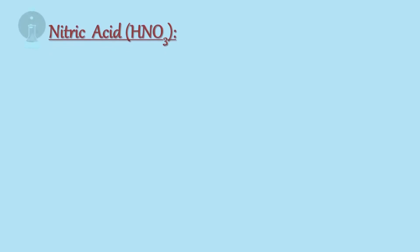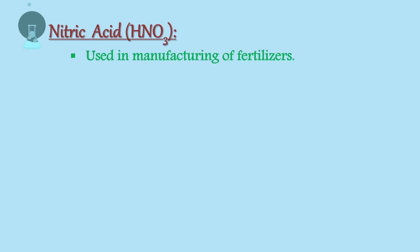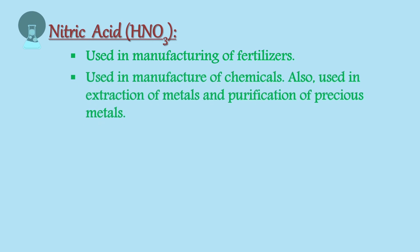Nitric acid: Nitric acid is used in manufacturing of fertilizers such as ammonium nitrate. It is used in the manufacture of chemicals, for example in making dyes. It is also used in extraction and purification of precious metals.